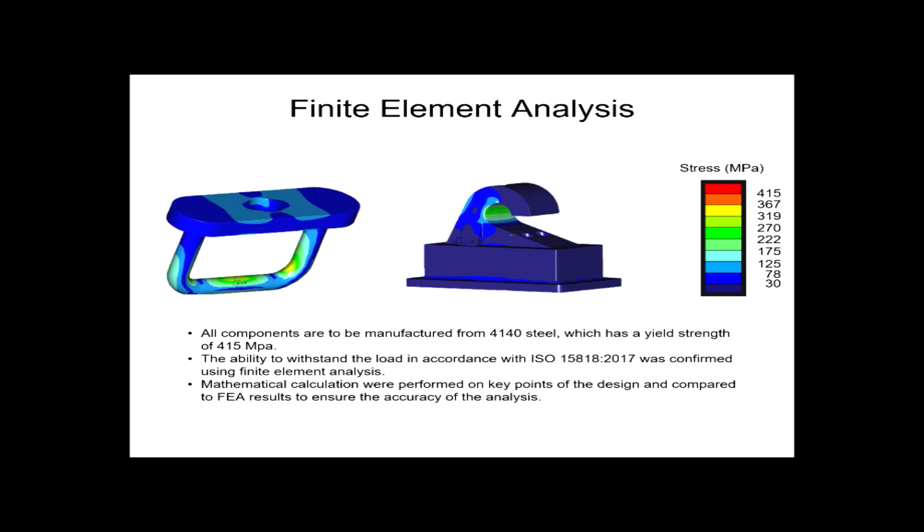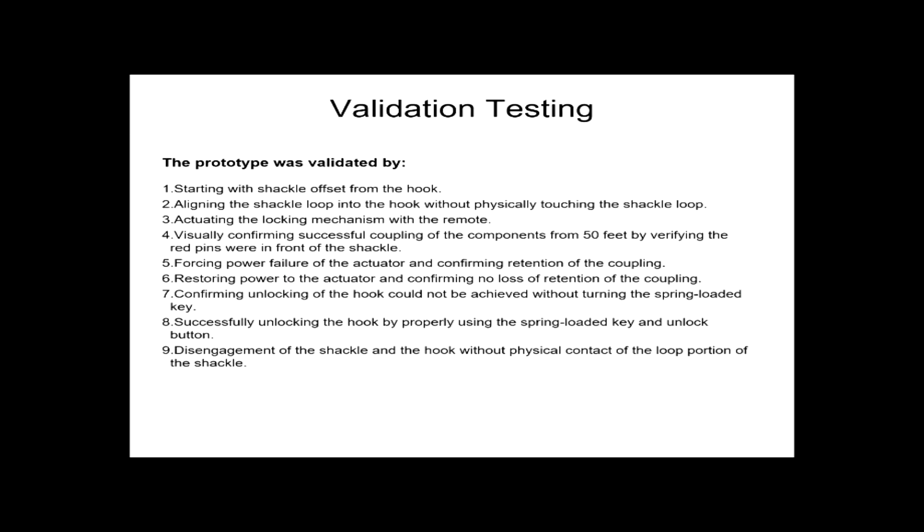In order to validate the prototype, we started by offsetting the shackle from the hook and then proved it could be aligned without physically touching the loop. Once the hook was aligned, the device was locked with the remote. It was then seen if it was possible to confirm the hook was locked by identifying the red pins 50 feet away.